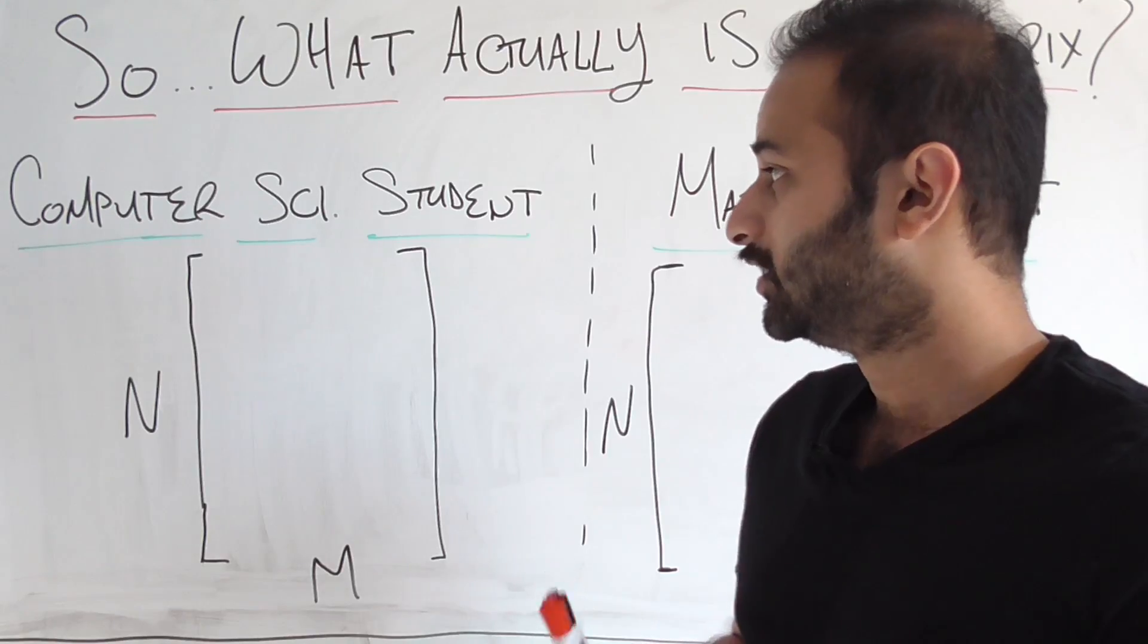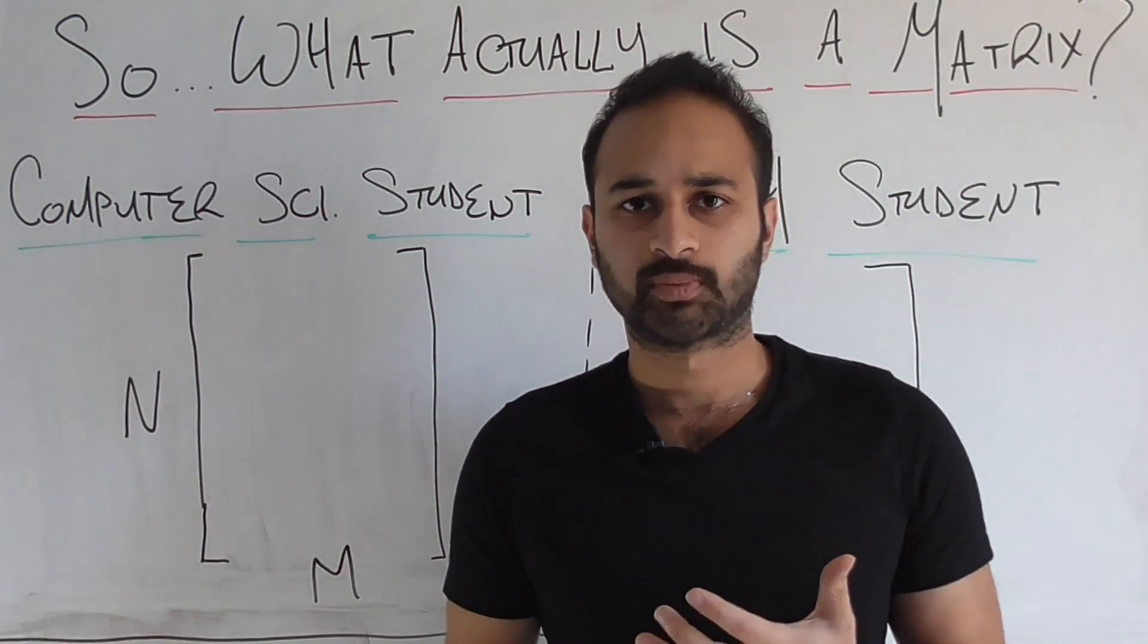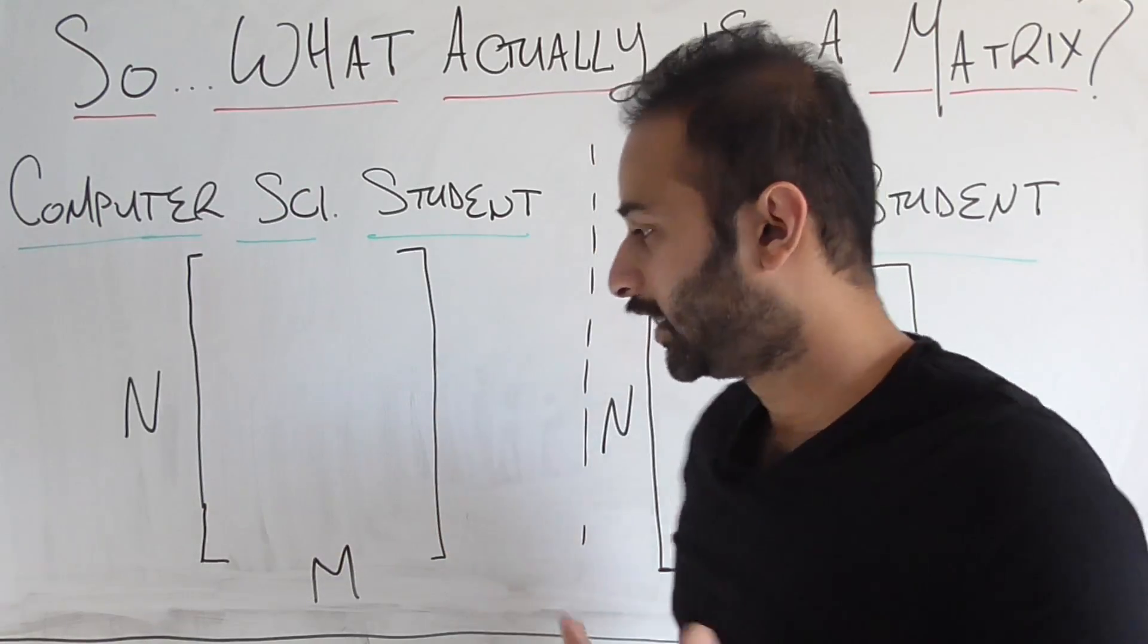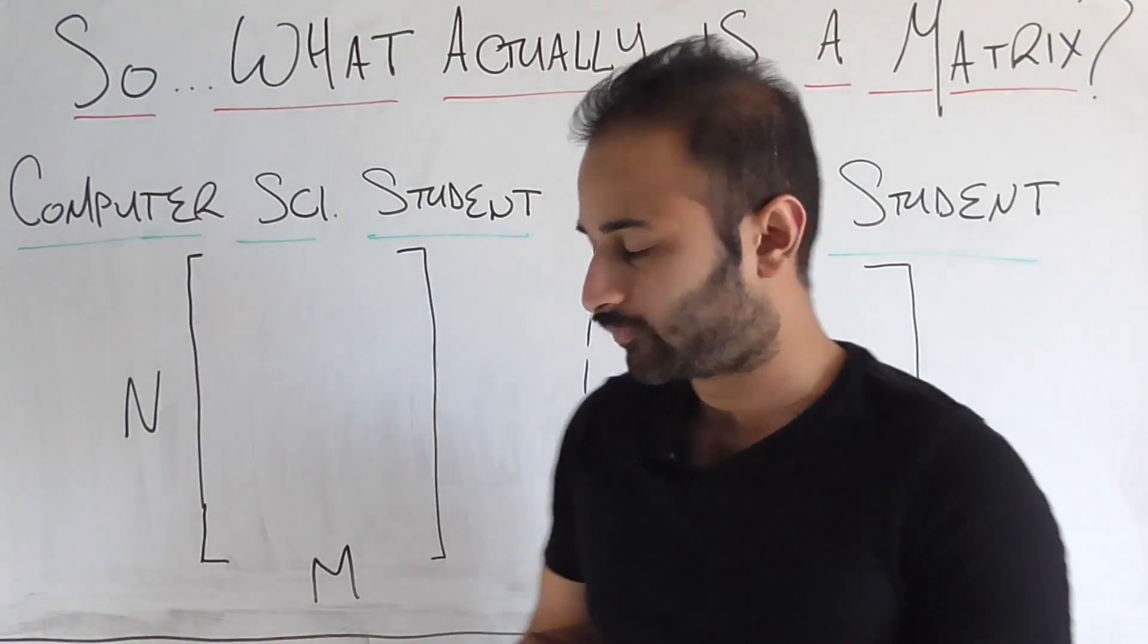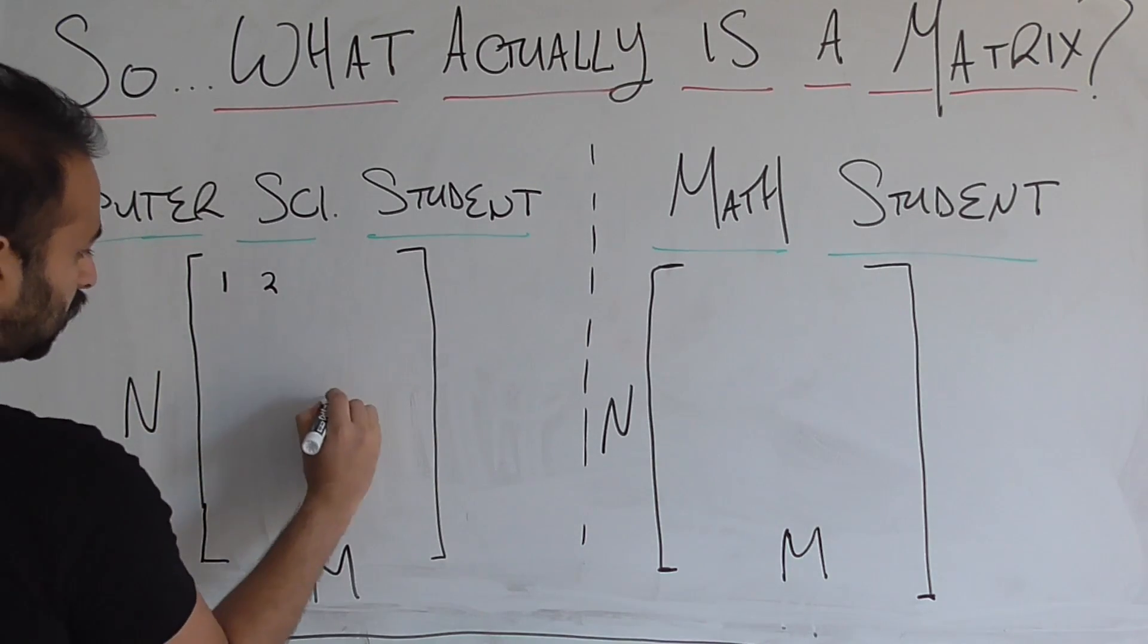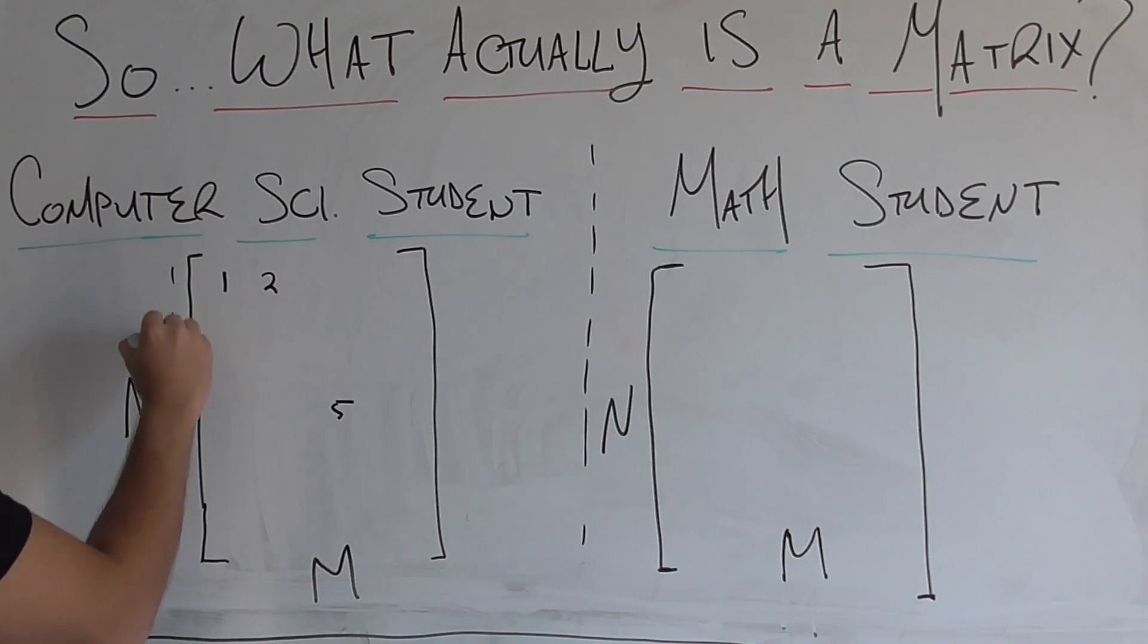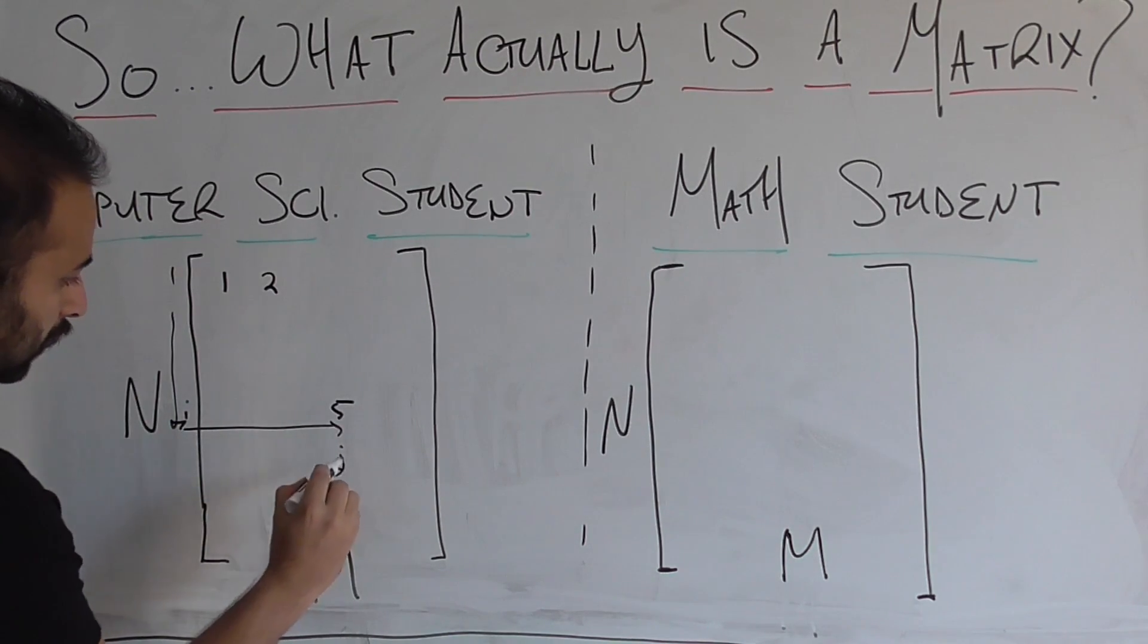So the first thing we'll talk about is the computer science student's perspective. So from a computer science student's perspective, a matrix is just an n by m array of numbers. So for example, if we were to populate a few of them, we put like one here, we could put two here, we could put five down here. Let's say this five is at position i, so row i, and then column j.